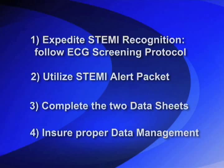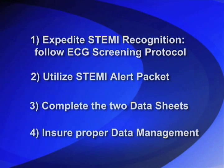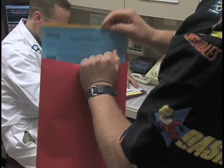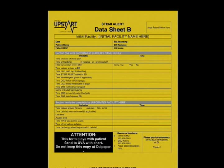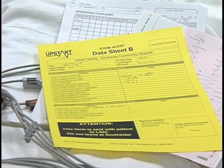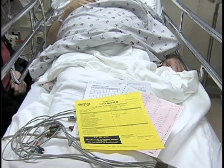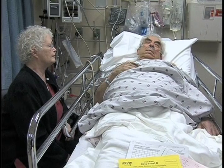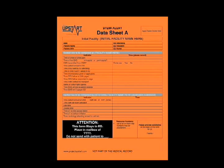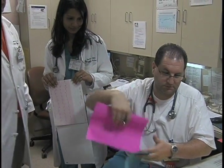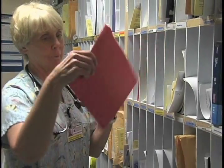Now let's move on to key action number four, which also deals with data: ensure proper data management. Data collected during our STEMI alert needs to be sent on to the appropriate destination. For example, data sheet B must always accompany the patient, whether they are sent to the catheterization lab, admitted, or transferred to another facility. Once that patient's treatment is completed, data sheet B will have a clear record of their treatment from recognition to reperfusion. It's extremely important that data sheet B follows the patient and does not get lost. Data sheet A, in contrast, stays in the emergency department. After the STEMI alert is completed, data sheet A is collected along with the three checklists and placed in the red envelope to be sent to the emergency department's QI person.